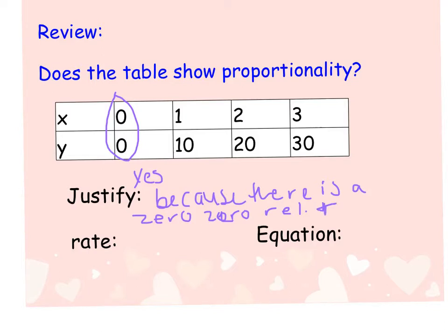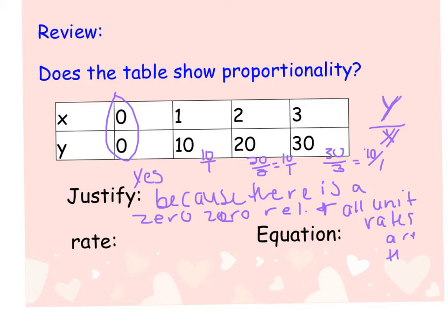So, I'm going to check my unit rates. Here, 10 over 1. 10 over 1, 20 over 2 simplifies to 10 over 1, and 30 over 3. It's always that Y change over the X change. 30 over 3 also equals 10 over 1. So, there is a yes, because there is a 0, 0 relationship, and all unit rates are the same.